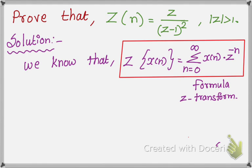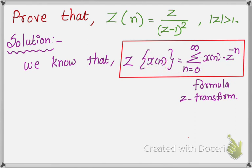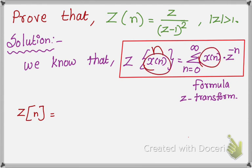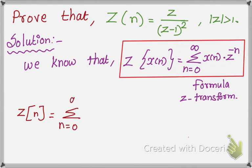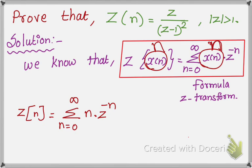Now, here x(n) is there — it will come inside as x(n) into Z to the power of minus n. Similarly, we are going to find the Z-transform of n. Here n is there, so Z of n equals — just apply in place of x(n), you put n. The formula also has n in this place, so we can use n here.